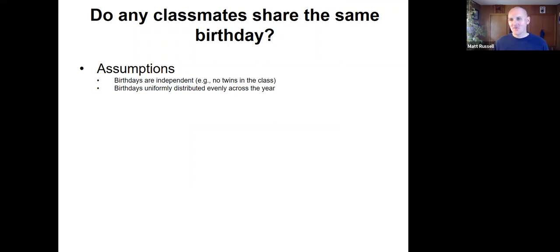And so let's assume a few things first. The first is that birthdays are independent. And so what might that mean? Well, we might want to consider that there might not be any twins in the class. If we have twins, they're not necessarily independent births, they're more clustered. We might also assume that birthdays are uniformly distributed evenly across the year.